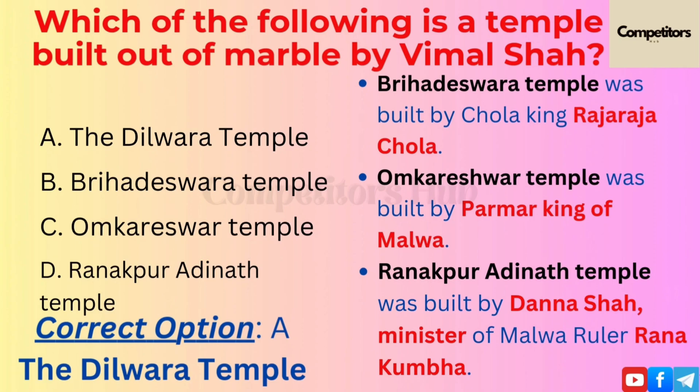Brihadeshwara Temple was built by Chola King Raja Raja Chola. Omkareshwara Temple was built by the Parmar King of Malwa.